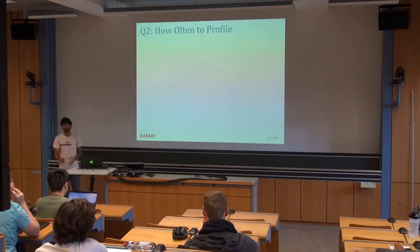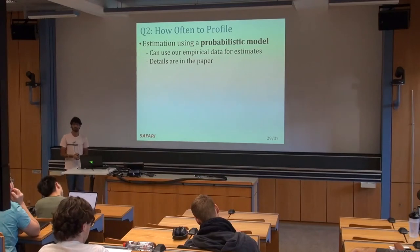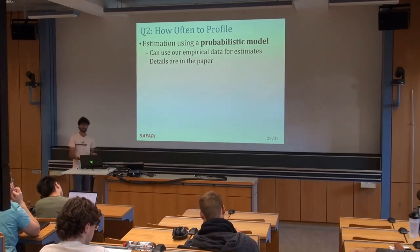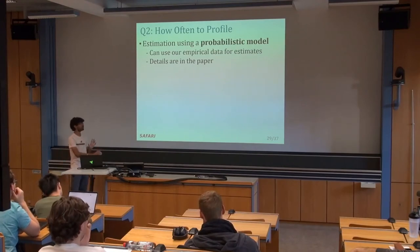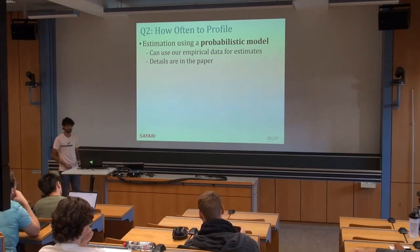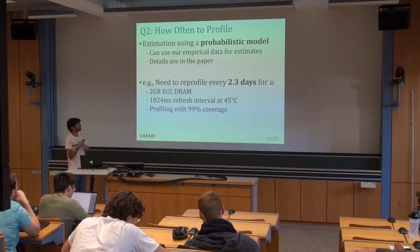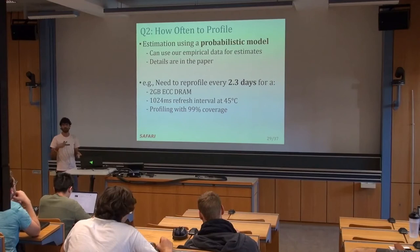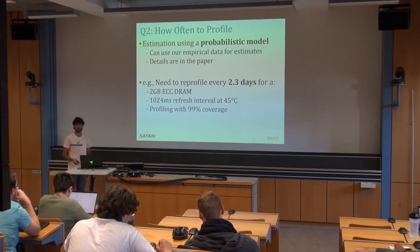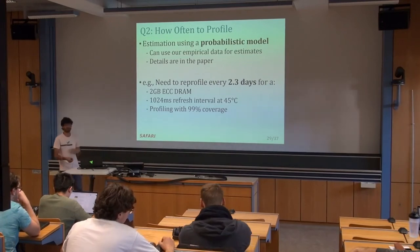The second question is how often should we run this profiling mechanism. We estimate this using a probabilistic model and use empirical data from our characterization studies plugged into the model. For a specific configuration — a 2 gigabyte DRAM chip with error correction capability — we find that we need to reprofile every 2.3 days. This is just one point to put things into perspective, but the paper has a whole analysis of different conditions; these are parameters you can trade off depending on what you want.